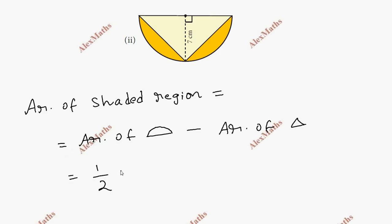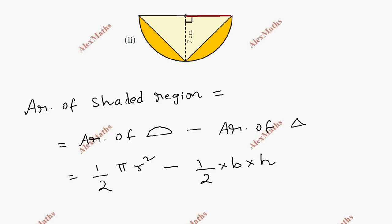Semi-circle formula: half into pi r squared, minus area of triangle: half into base into height. Radius is equal to 7, and the base of the triangle is total 14. So substituting: half into 3.14, radius 7, so 7 squared minus half into base 14 and height.